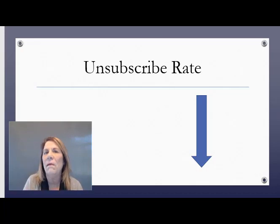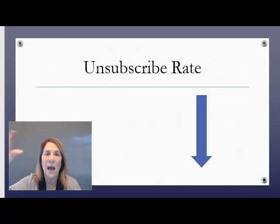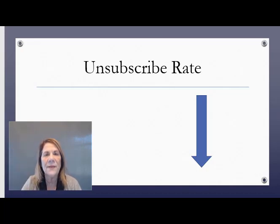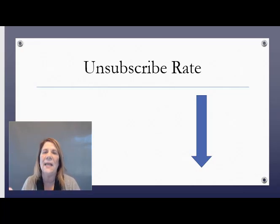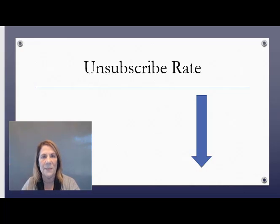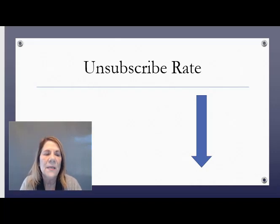The last metric is your unsubscribe rate. Do you notice that on your tenth email a lot of people are starting to unsubscribe? Maybe you had really high open rates in the beginning — 20, 25, 15 percent — but by email ten in your sequence, that open rate is going down and people are unsubscribing. You can say, 'okay, I'm doing something wrong between this point and this point.' Go back, look at those emails, and tweak them to try to get those rates back up.